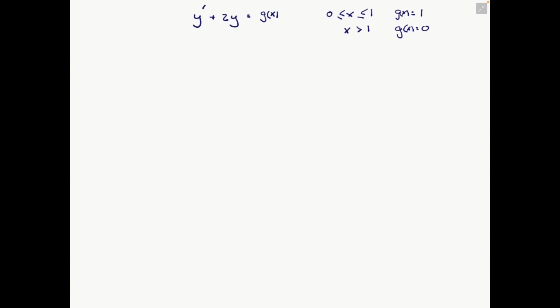Let's solve the first case — our typical problem. We have y prime plus 2y equals 1, for x greater than 0 but less than 1. So p of x equals 2, g of x is 1, and mu of x equals e to the integral of 2 dx, which is e to the 2x.